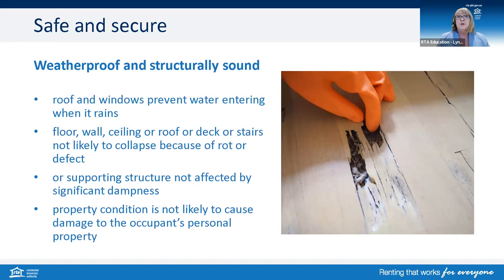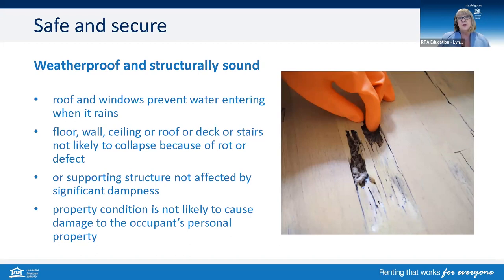Let's step through what safe and secure means. Firstly, it's about being weatherproof and structurally sound — the roof and windows need to prevent water entering. The floors, walls, ceiling, roof, deck and stairs are not likely to collapse due to rot or a defect. The supporting structure is not affected by significant dampness, and the property condition is not likely to cause damage to the occupant's personal property.